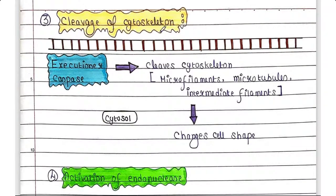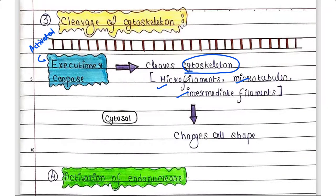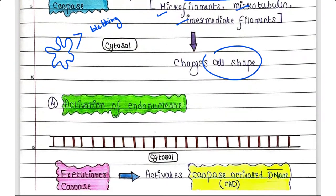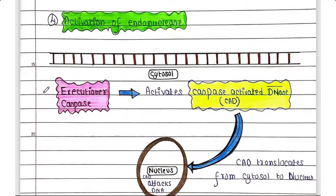The next target of executioner caspase is cytoskeletal proteins. When activated, it cleaves cytoskeletal proteins such as microfilaments, microtubules, and intermediate filaments. These proteins are required to maintain cell shape and rigidity. When they are cleaved, the cell shape is distorted, and the plasma membrane shows blebbing — these bulges in the plasma membrane occur due to the cleavage of cytoskeletal proteins.